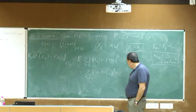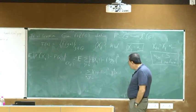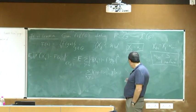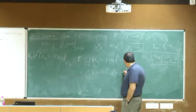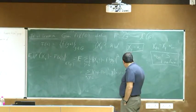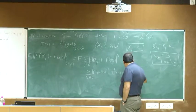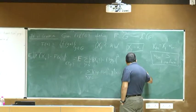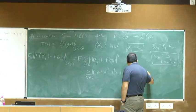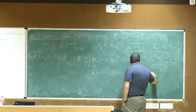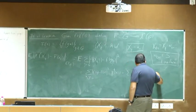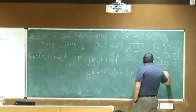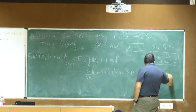This is going to be very close to the Dirichlet form. Let's write it out as some F(X) squared plus F(Y) squared minus 2 F(X) F(Y), times P^T(X,Y).